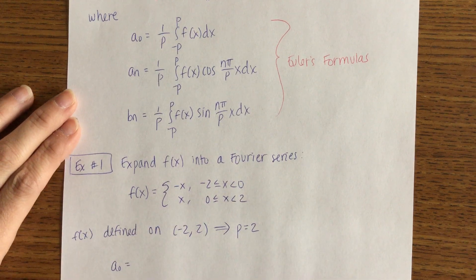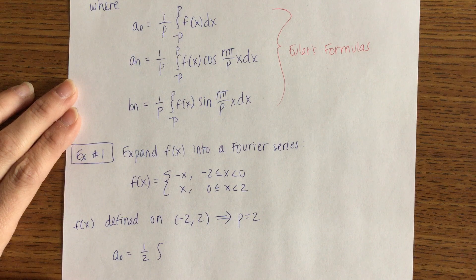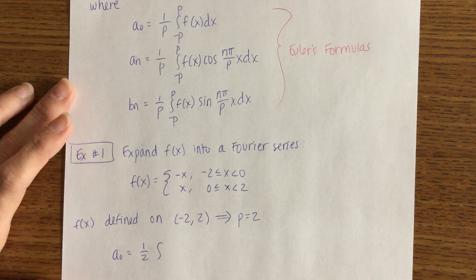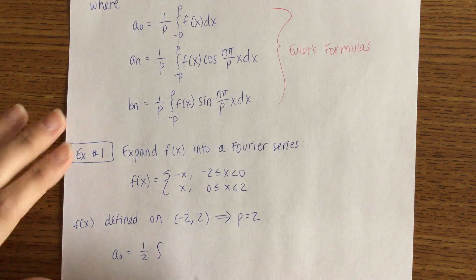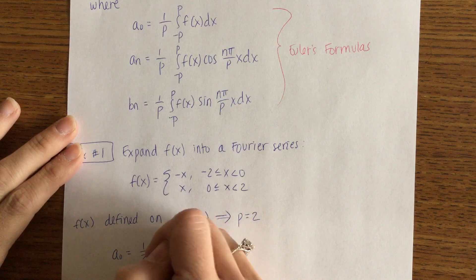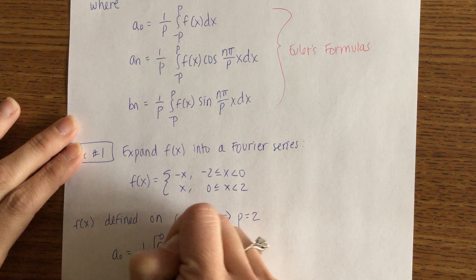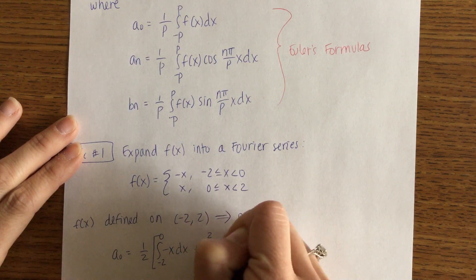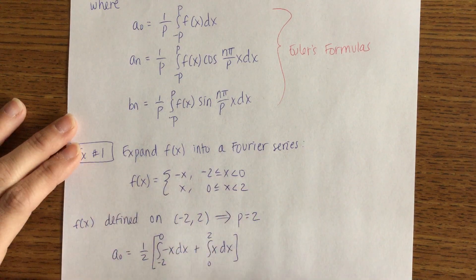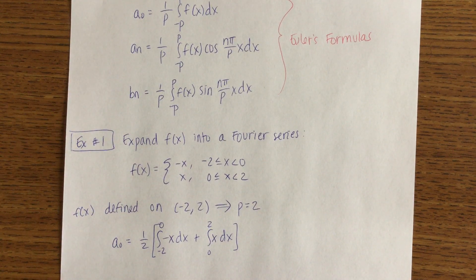First thing to notice is that f of x is defined on negative 2 to 2. We set up above that f of x was defined on negative p to positive p, so this tells us that p equals 2. a_0 is (1/p), so 1/2, times the integral. Since it's piecewise, we need two integrals: the integral from negative 2 to 0 of negative x dx, plus the integral from 0 to 2 of x dx.